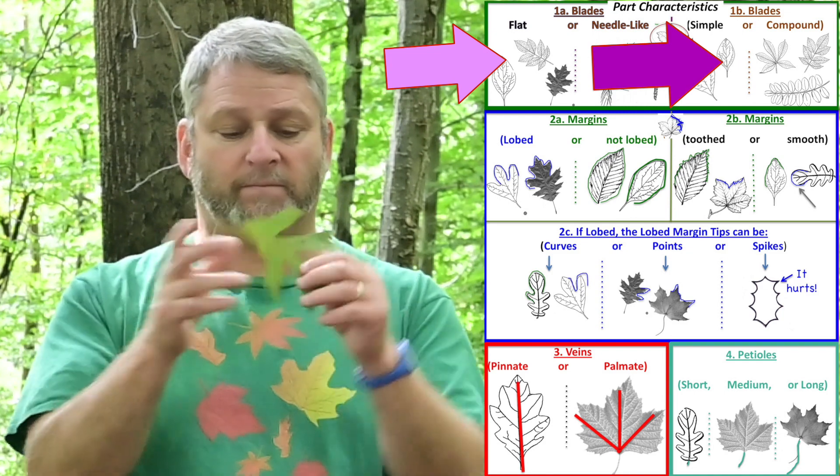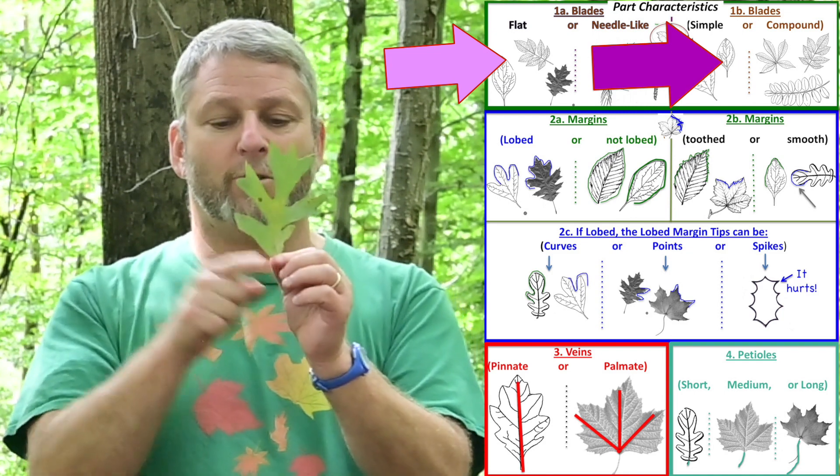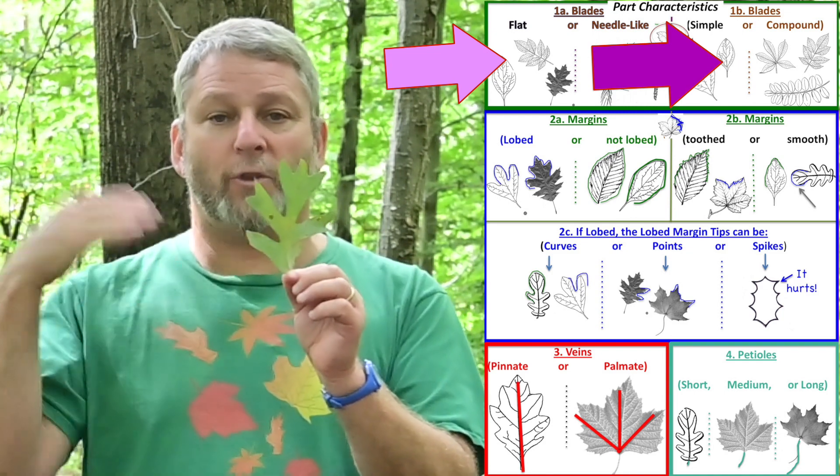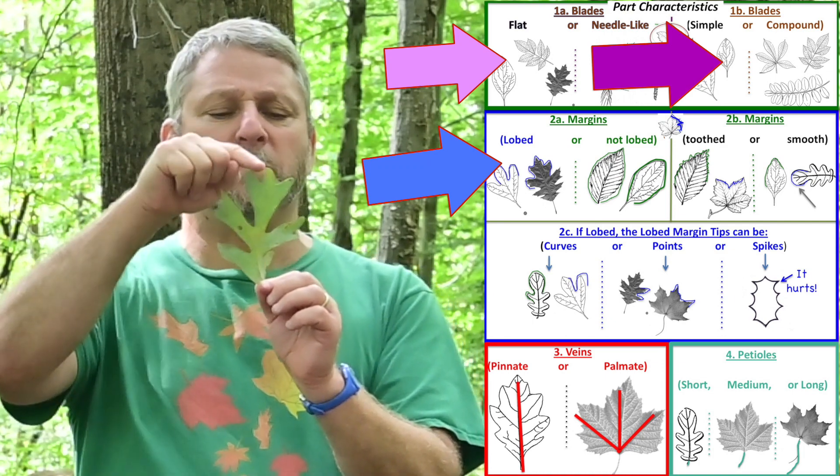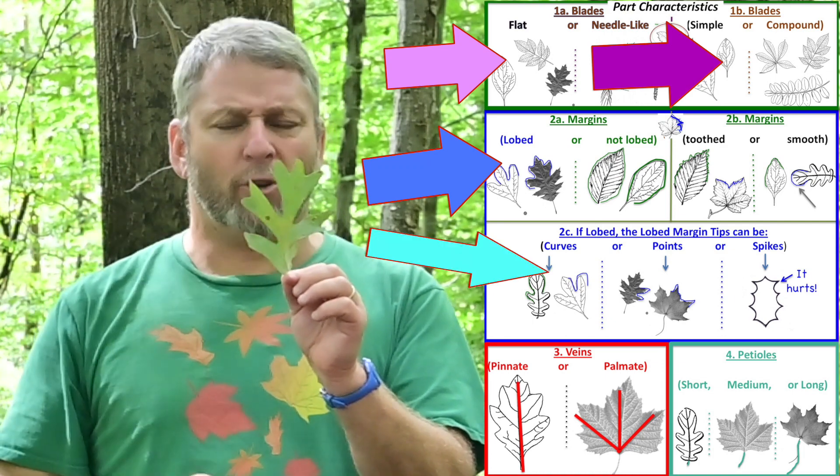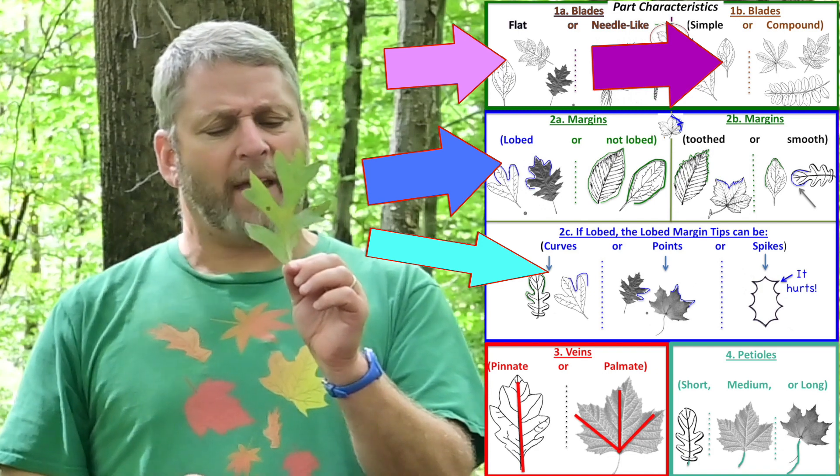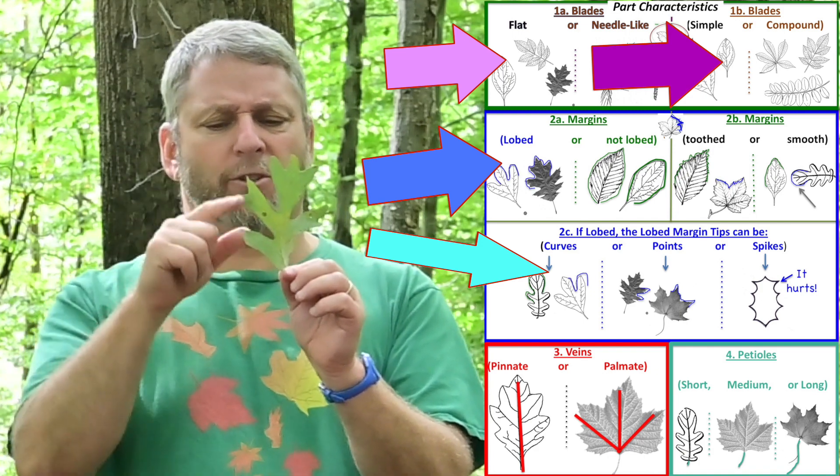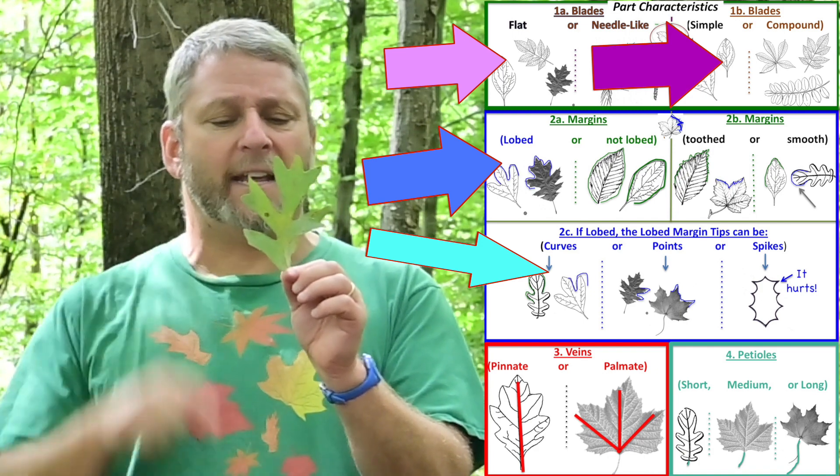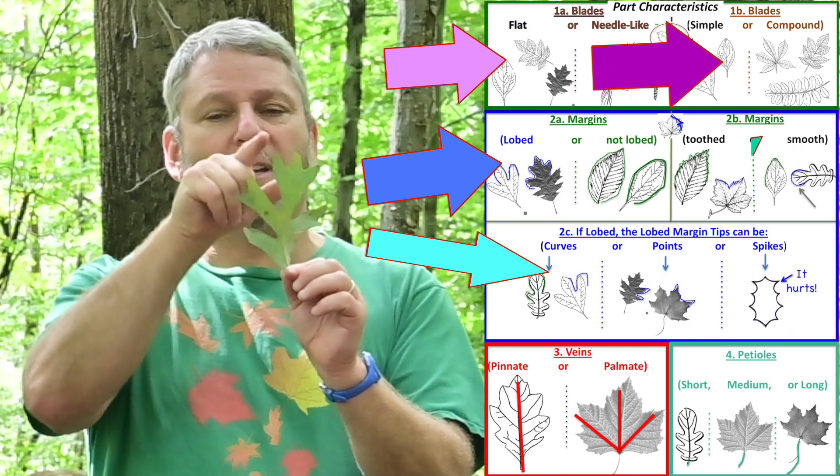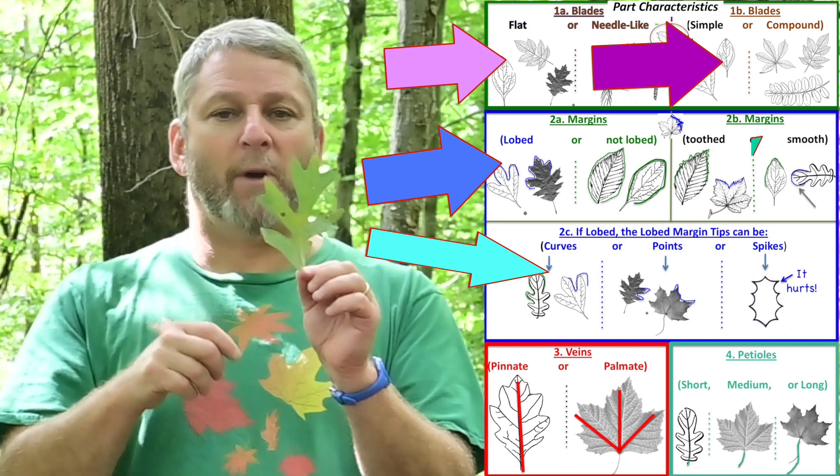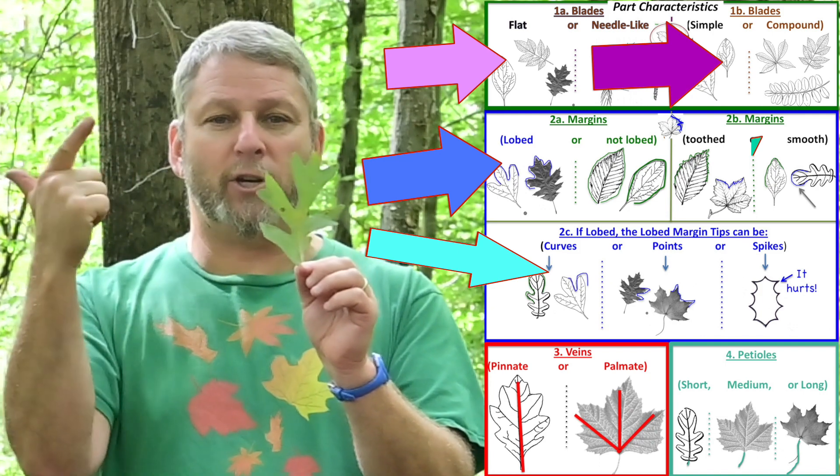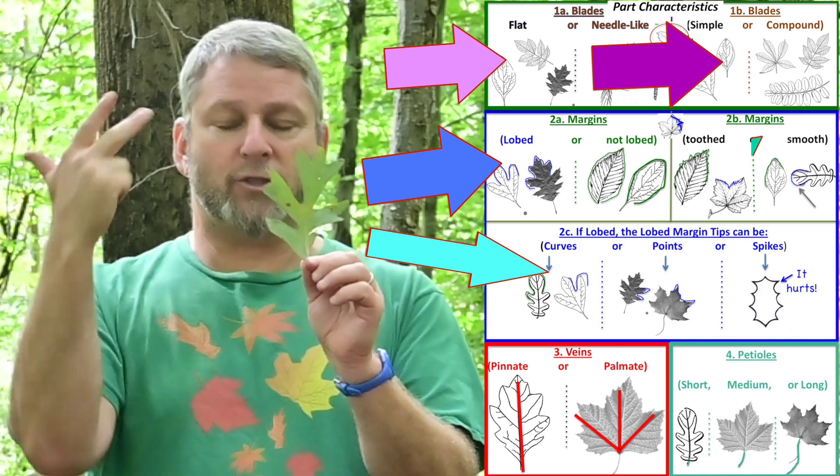Now let's look at the margin. The margin goes out, in, out, in. So the margin has lobes. The edges of the lobes look kind of curved to me, and they're certainly not sharp, so the edges are curved. But in between the lobes, it's very smooth. So the margin is lobed, curved tips of the lobes, and smooth.